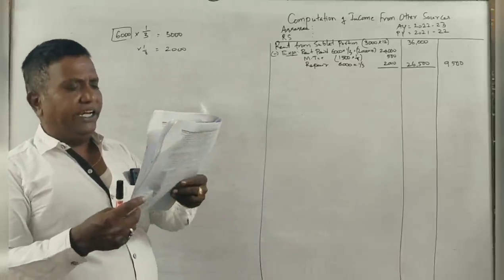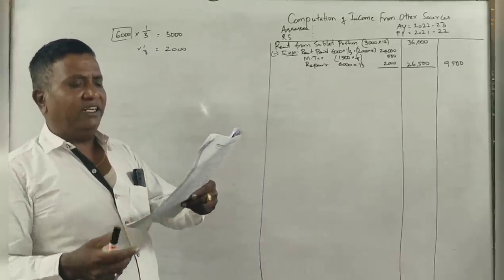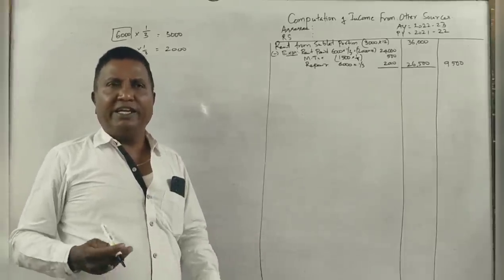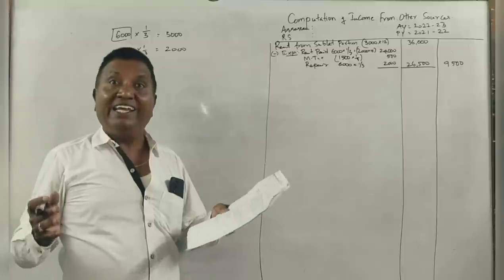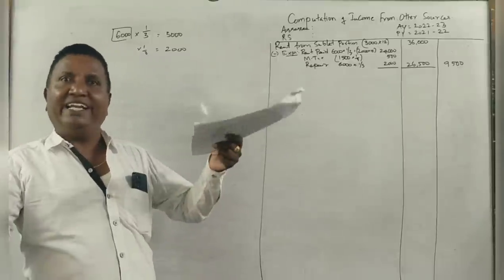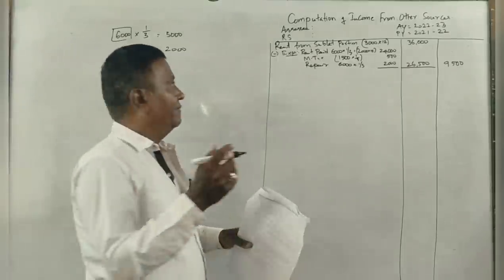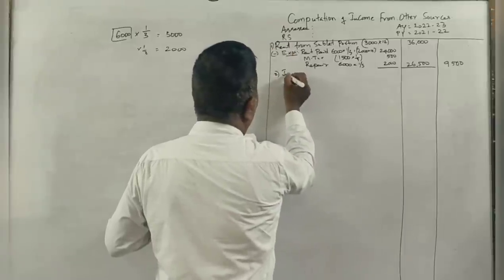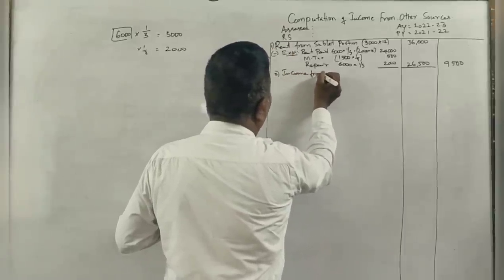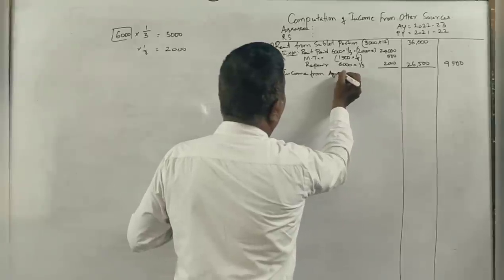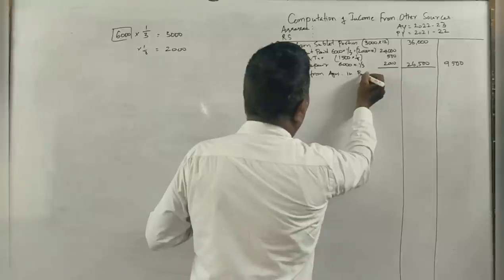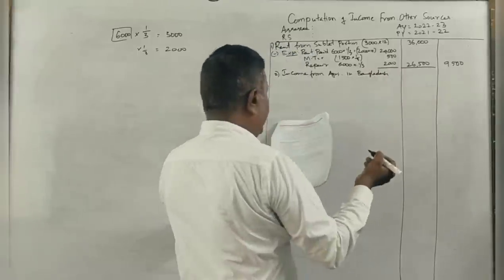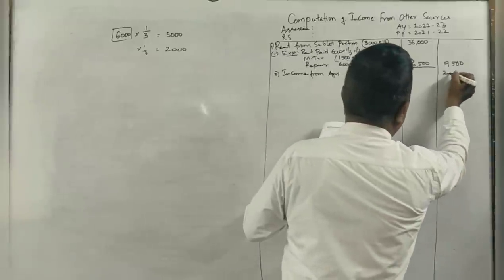Next, income from agricultural land situated in Bangladesh. Any income from agriculture in Bangladesh or outside India is fully taxable. Income from agriculture in India is exempted. This income from Bangladesh of 20,000 is fully taxable.